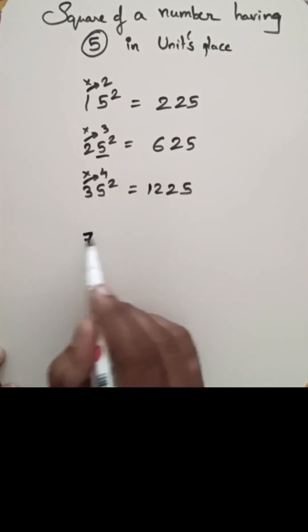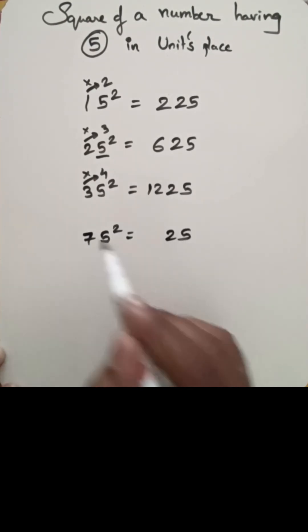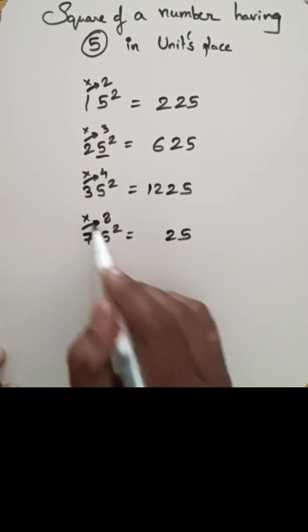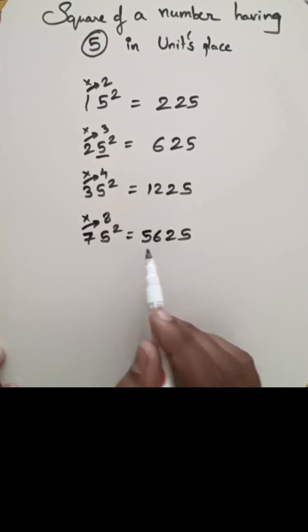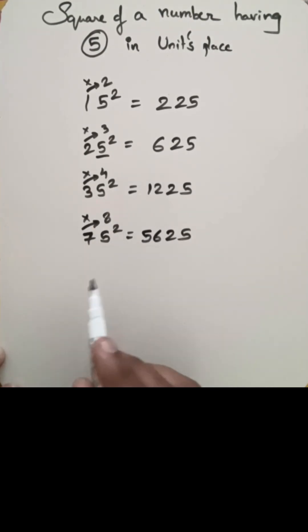So similarly, let us go with 75 square. 5 square is 25, and 7 — after we have 8, so 7 into 8 is 56. So 75 square is 5625.